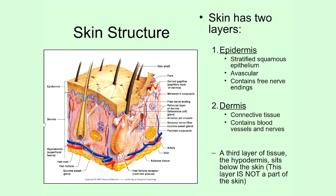The dermis also contains blood vessels, which you can see running prolifically through this layer. These blood vessels give their oxygen and nutrients up to the tissues of the dermis, and then the oxygen and nutrients have to diffuse up into the epidermis as well — that's how the epidermis gets its nutrients.